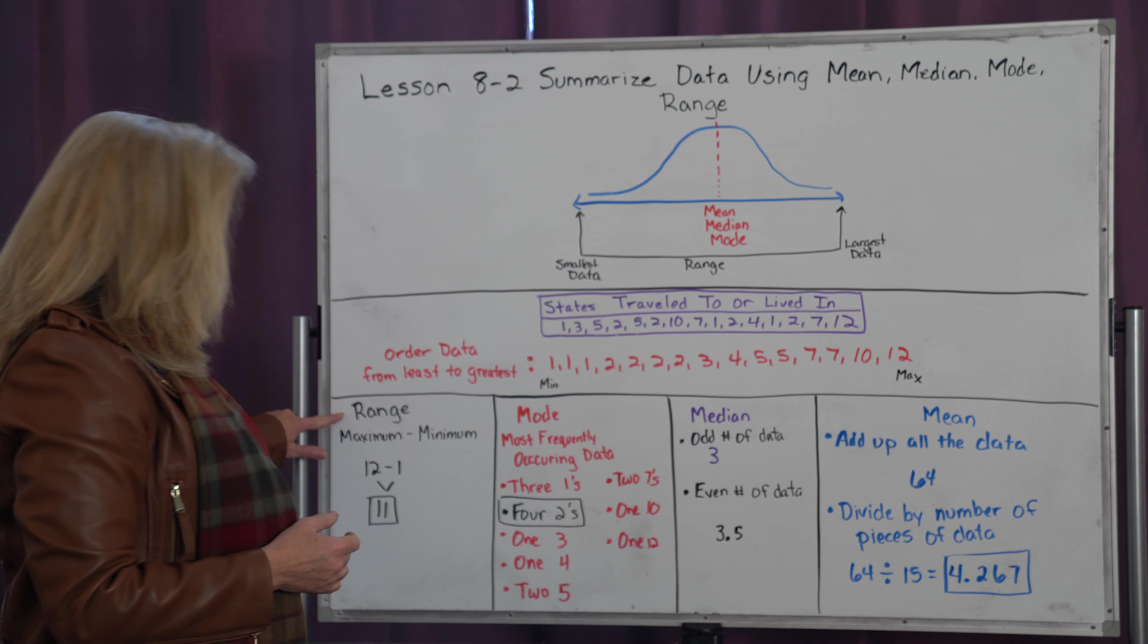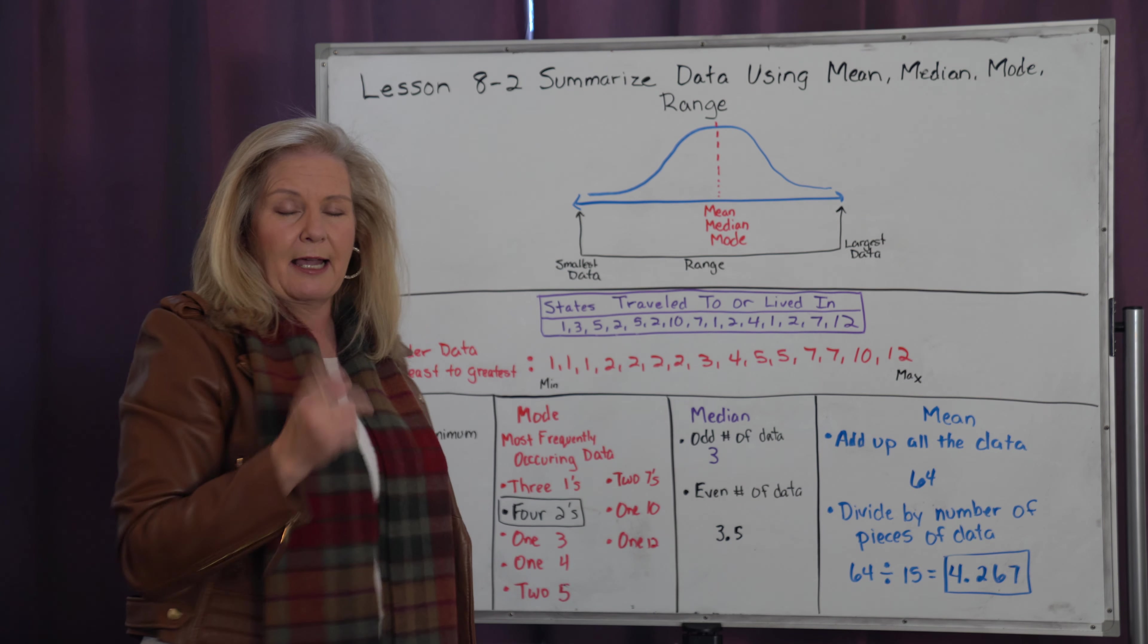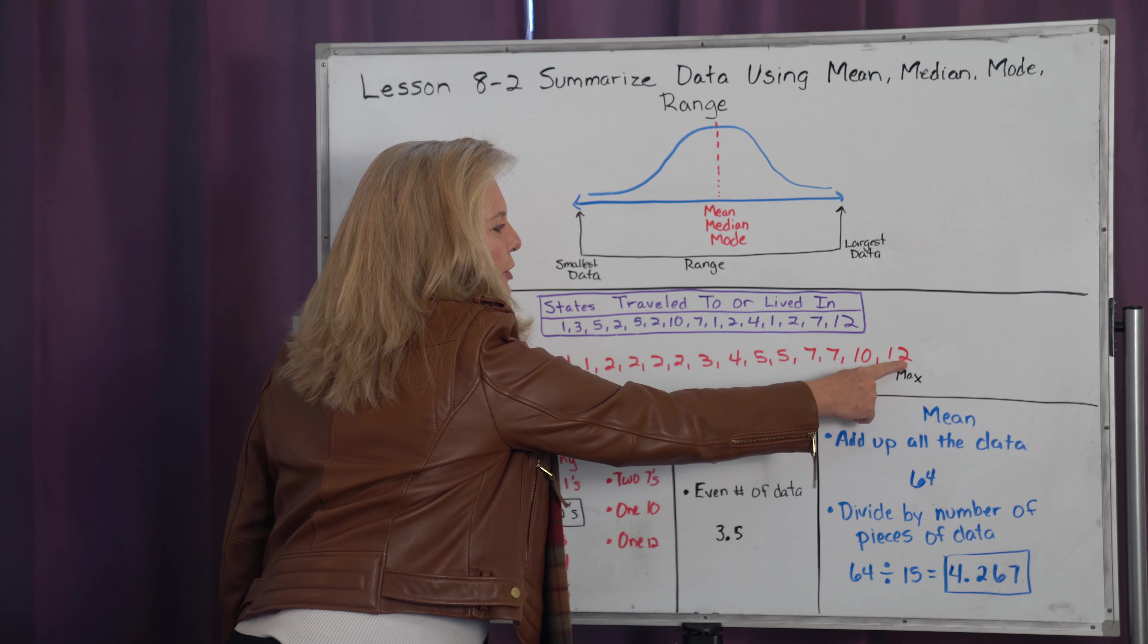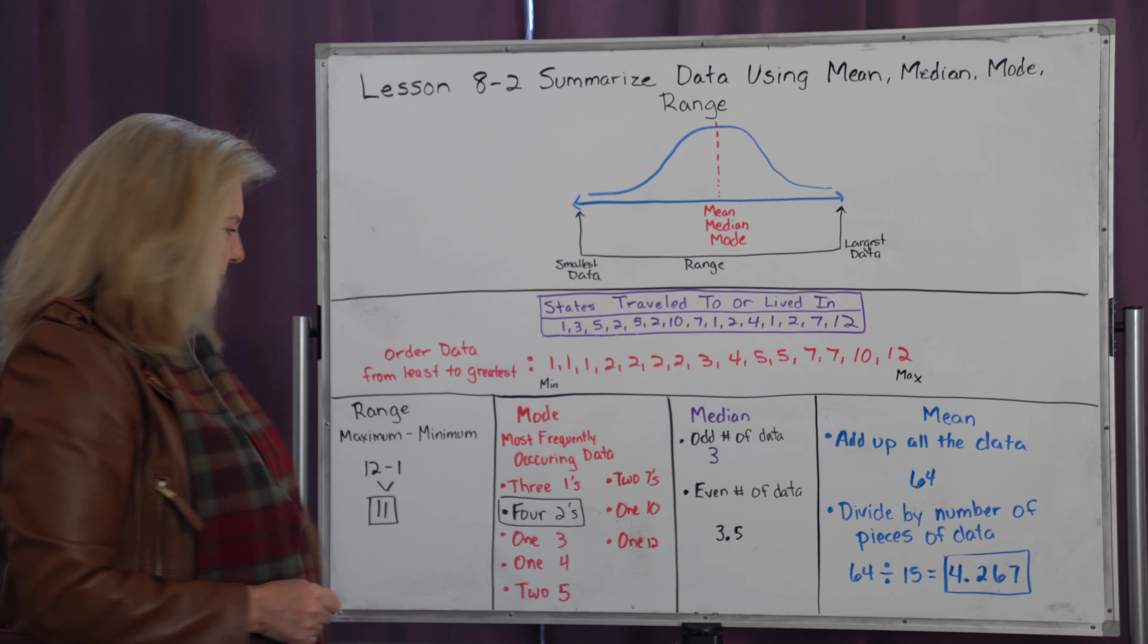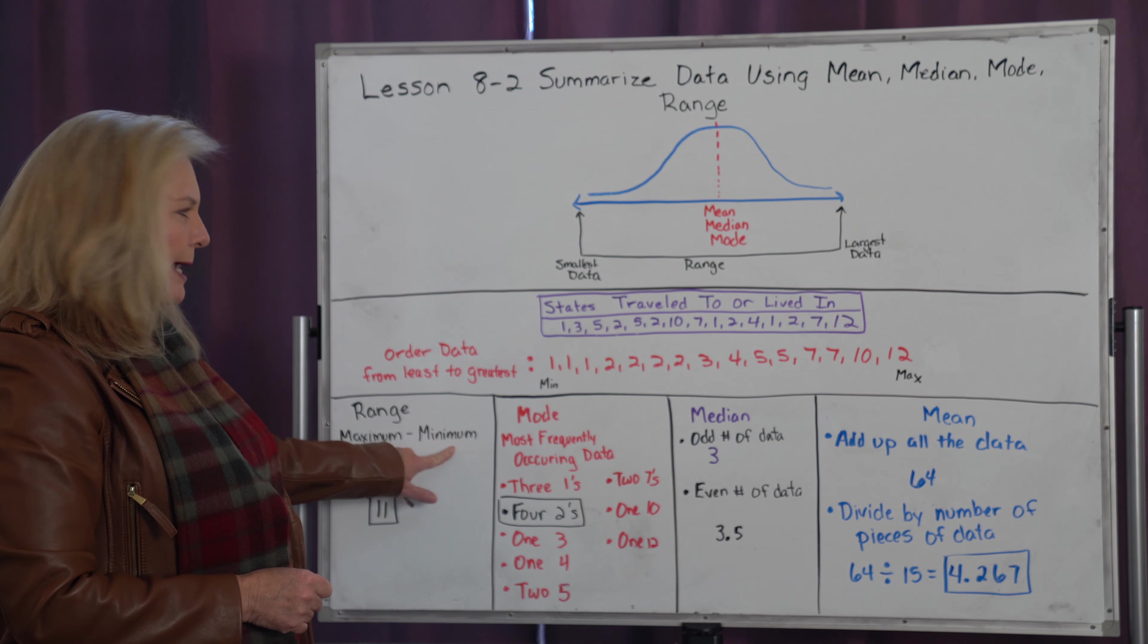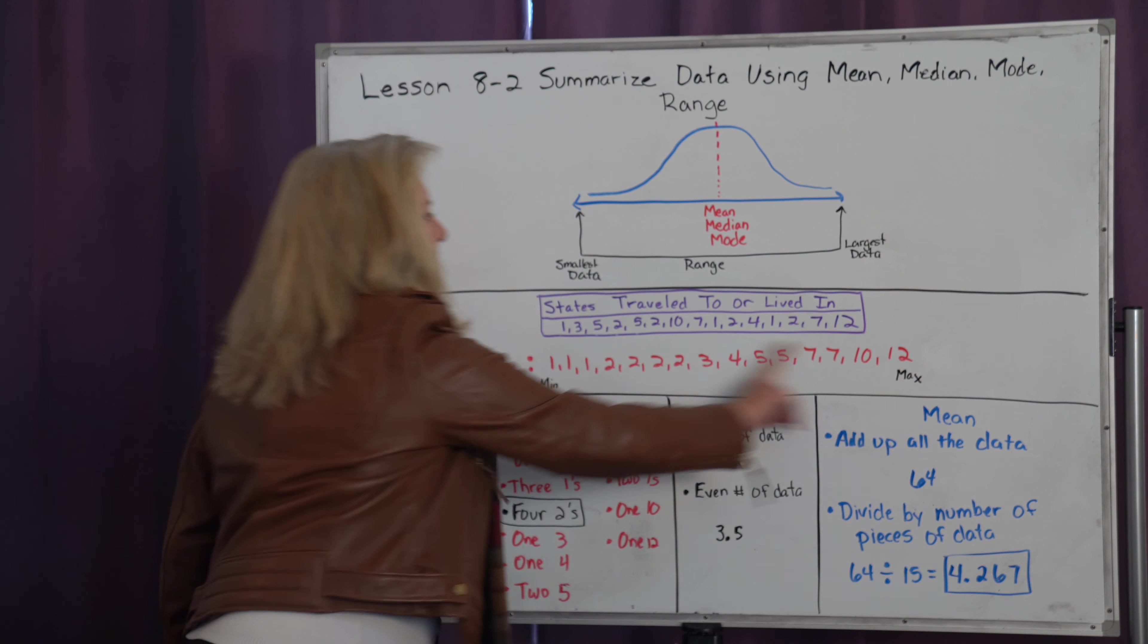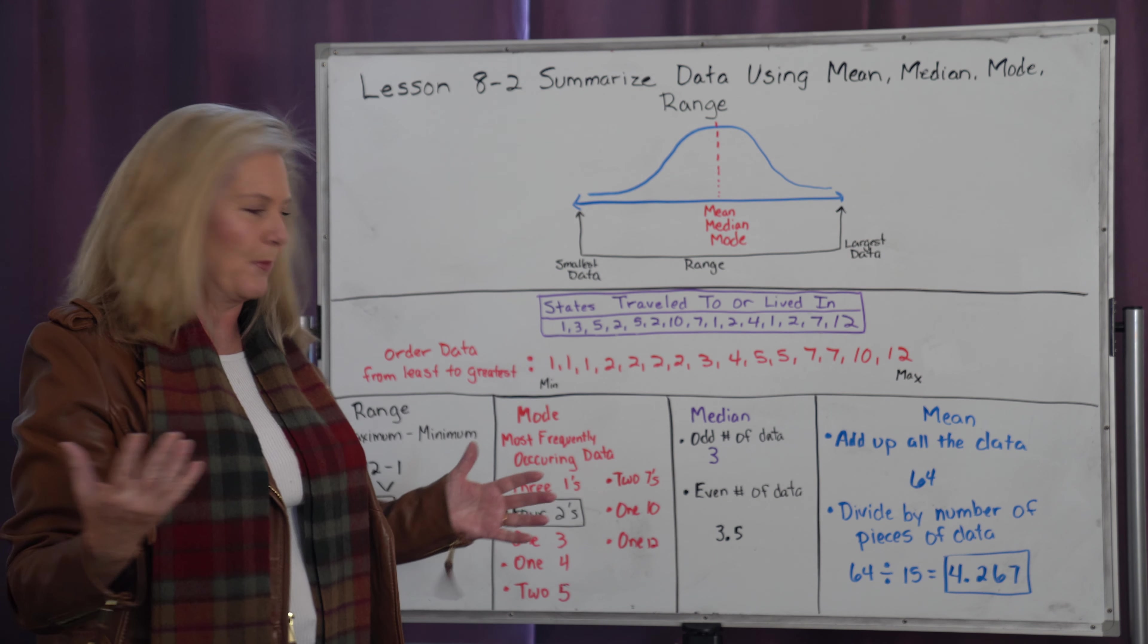If we're going to look at the range, the easiest measure is always the range. You're just going to take your largest piece of data and subtract your smallest piece of data. If I take my maximum of twelve and subtract my minimum of one, twelve minus one is eleven, and it tells me that my spread of data is spread across eleven numbers.